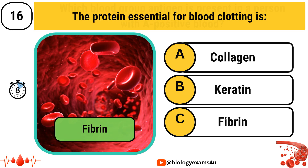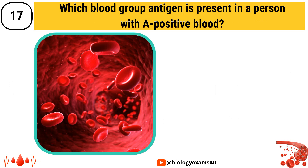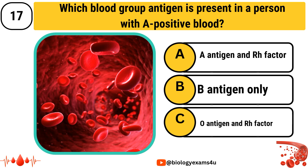Which blood group antigen is present in a person with A positive blood? Option A: A antigen and RH factor, Option B: B antigen only, Option C: O antigen and RH factor.